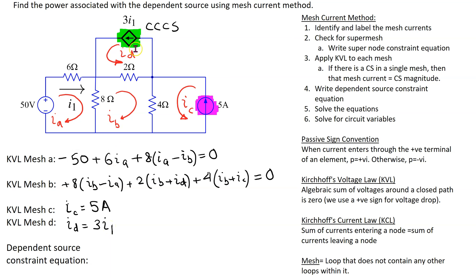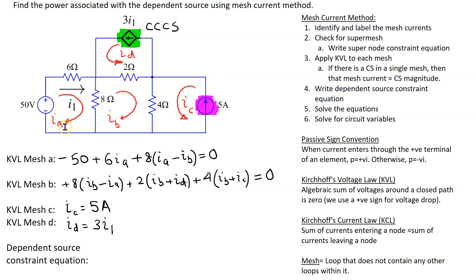Whenever there is a dependent source in the circuit, we need to write the dependent source constraint equation — relating the controlling parameter to the mesh currents. Here we need to relate I1 to the mesh currents. I1 is the current flowing through the 6-ohm resistor, and for this circuit IA is the only mesh current flowing through that resistor. Thus, I1 = IA.